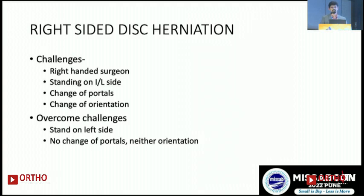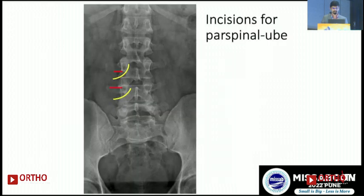Regarding right-sided disc herniations for biportal endoscopy: I perform these from the left side and don't find it difficult — only the inclination of the portals changes. From the left side I do it one way; from the right side I simply change my inclination without changing portals or orientation. Additionally, paraspinal UBE can be addressed transforaminally, but at L5-S1 it is sometimes difficult, especially for Bertolotti syndrome.